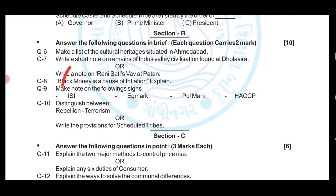Question number seven: Write a short note on remains of Indus Valley Civilization found at Dholavira. Alternatively, you can attempt: Write a note on Rani ki Vav at Patan. The answers to both these questions will be on your screen.